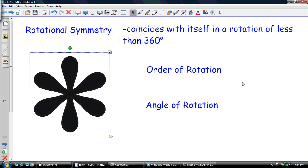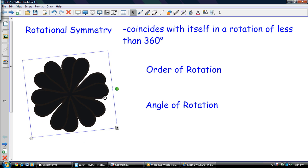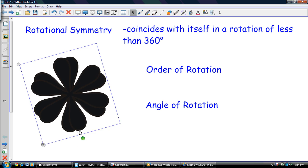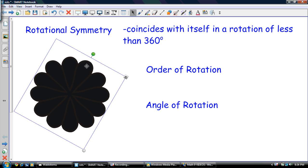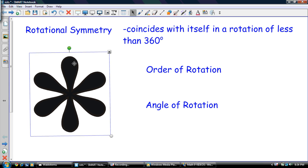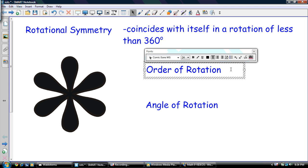With rotational symmetry, there are a couple definitions that we need to know: order of rotation. So order of rotation is basically asking the question, how many times does it coincide with itself? So if we look at this thing, we start, we got 1, 2, 3, 4, 5, and then we're back to the start, 6. So my order of rotation simply is equal to 6.